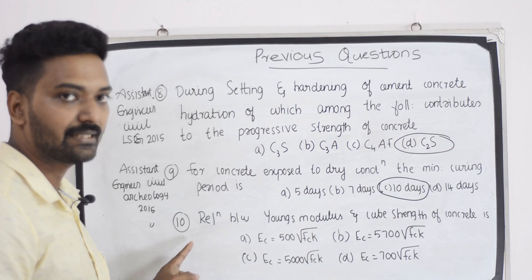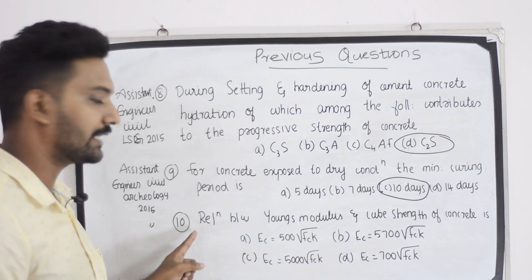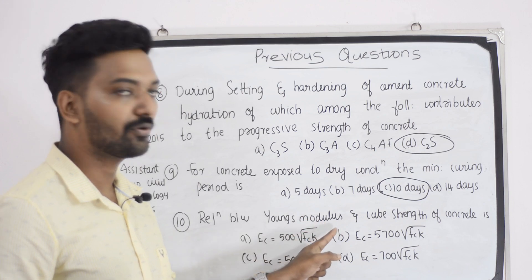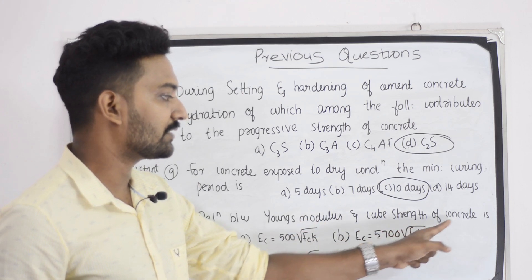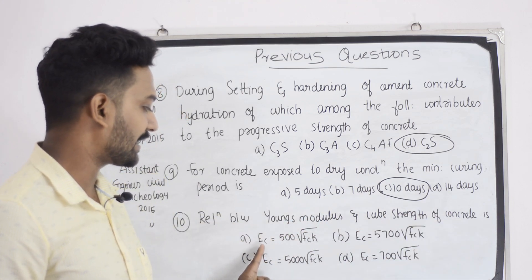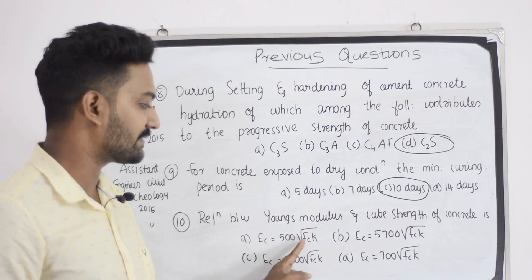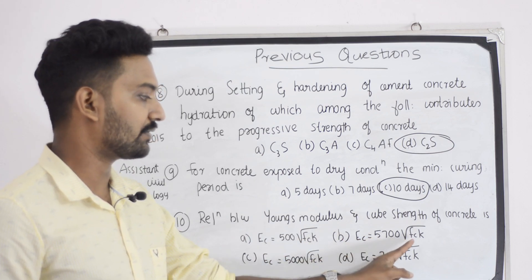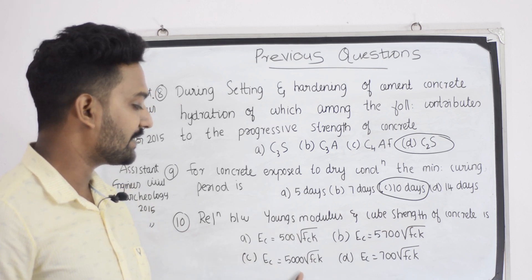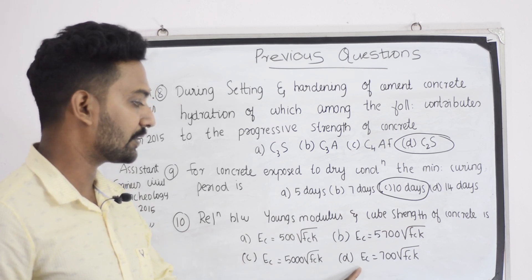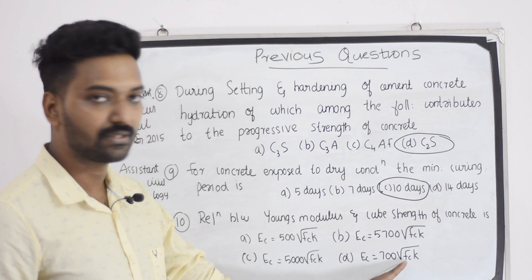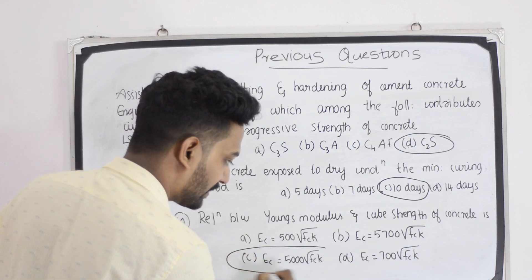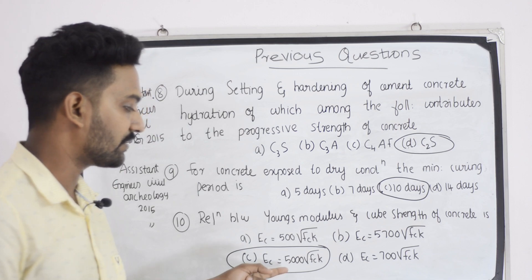Next question — assistant engineer, civil: what is the relation between Young's modulus and cube strength of concrete? First option, EC equal to 500 root FCK. Second option, EC 5700 root FCK. Third option, EC 5000 root FCK. And fourth option, EC 700 root FCK. The answer is EC 5000 root FCK.